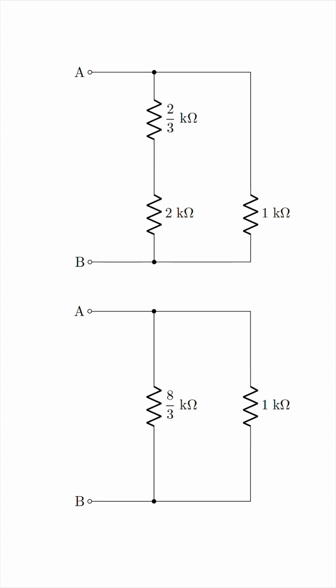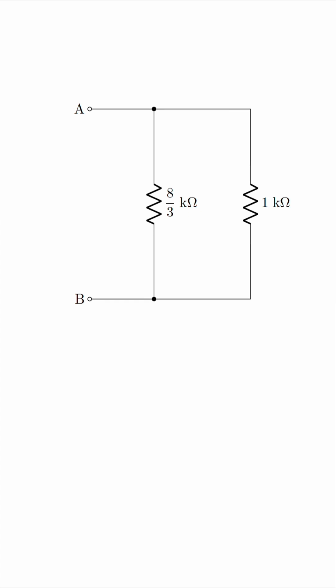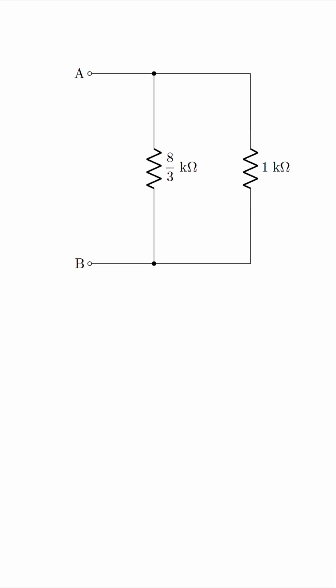And now we have two parallel resistors, and this is the easiest geometric representation possible for parallel resistors. So, we have 8 thirds times 1 over 8 thirds plus 1,